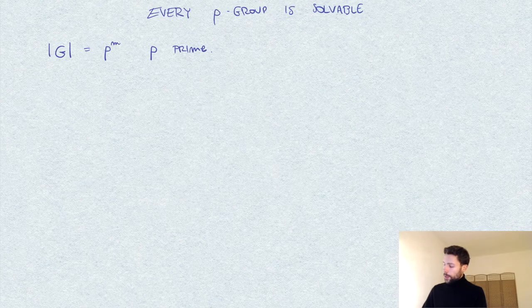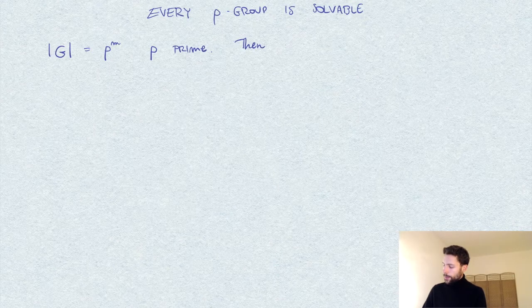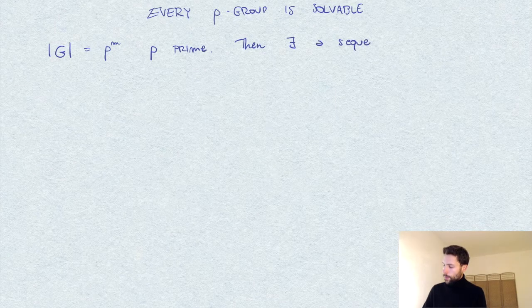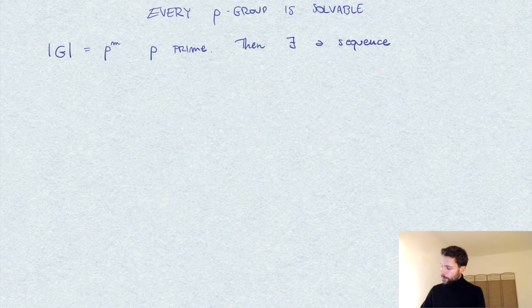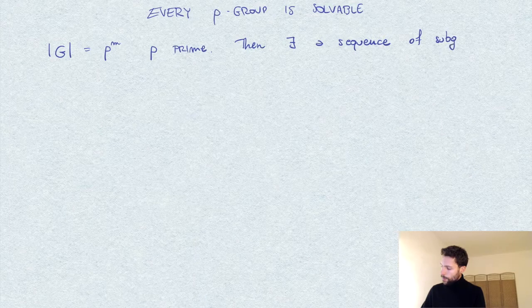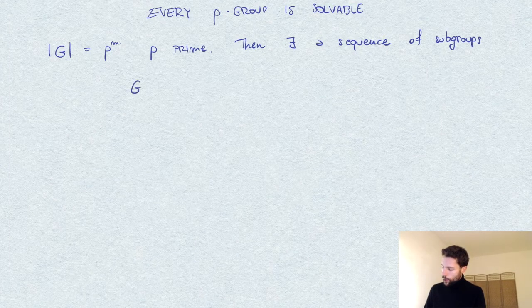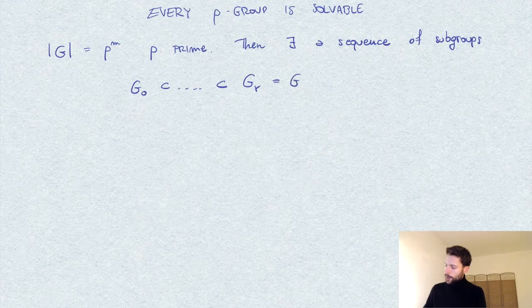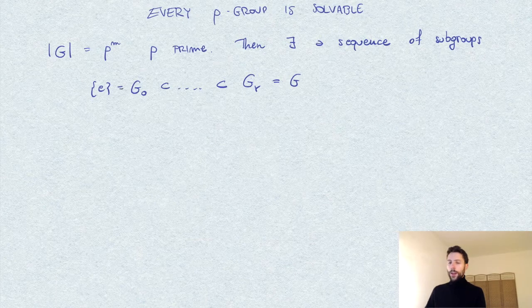Then solvable means that there exists a sequence of subgroups of the form G_0, and so on, G_r, where the last is the whole group.